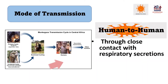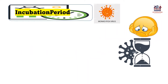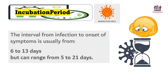Human-to-human transmission occurs through close contact with the respiratory secretions or skin conditions of an infected person, or through contaminated objects. The incubation period is usually 6 to 13 days, but can sometimes be 5 to 21 days.